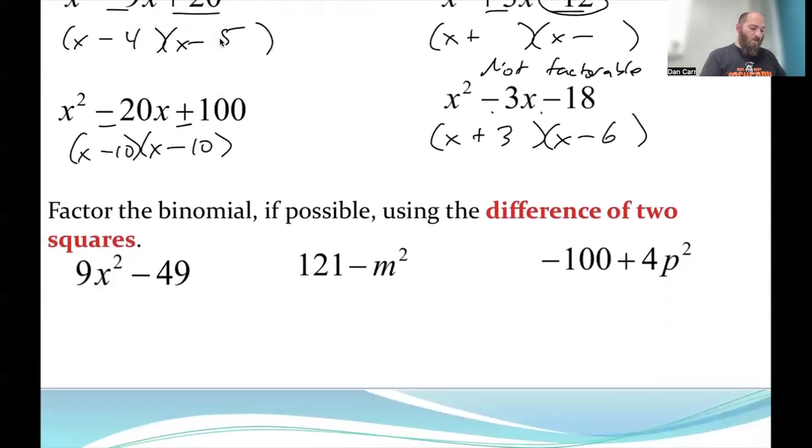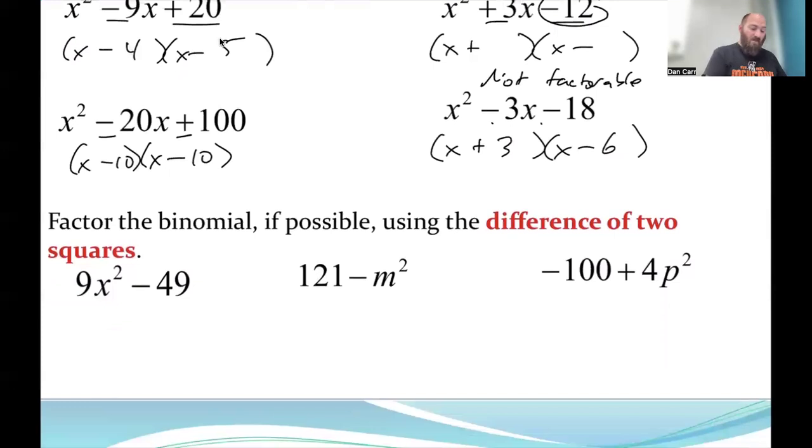A little bit more factoring practice. Remember with certain binomials, if they're the difference of two squares, we can set this up as a certain pattern. For example, 9x² - 49, that is (3x + 7)(3x - 7). 121 - m², that's (11 - m)(11 + m).